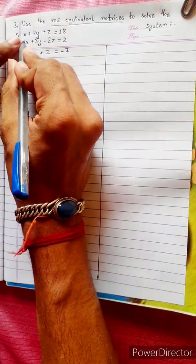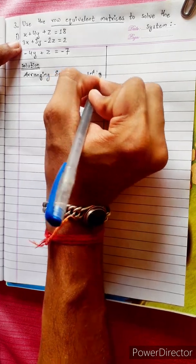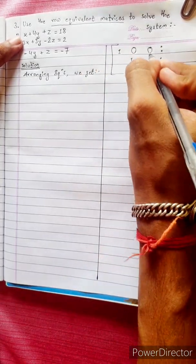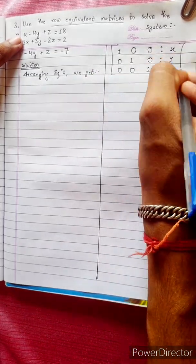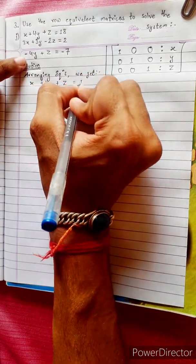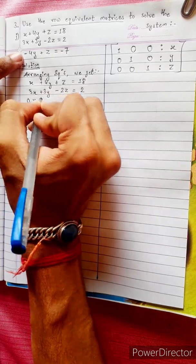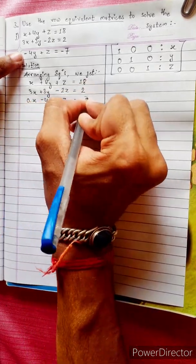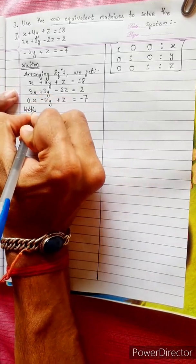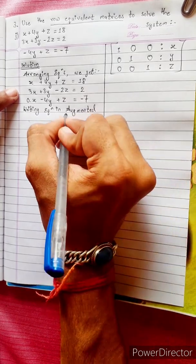Here we have the row equivalent matrices. I get the equations of the array. The given equations we get. We get the row equivalent matrices. This is the standard form. The main diagonal is 1, and the others are 0. Now I am writing your equations in augmented form, also called the coefficient augmented form.